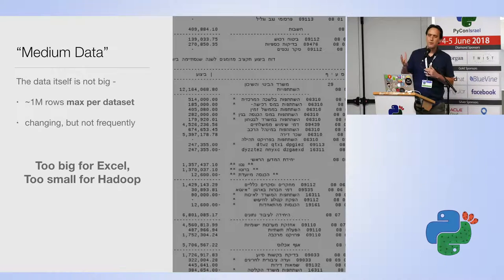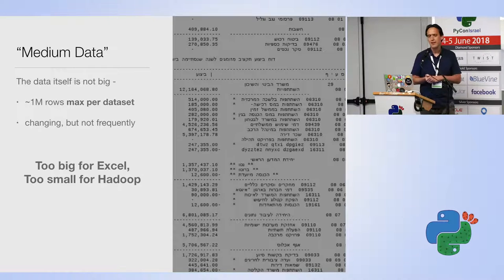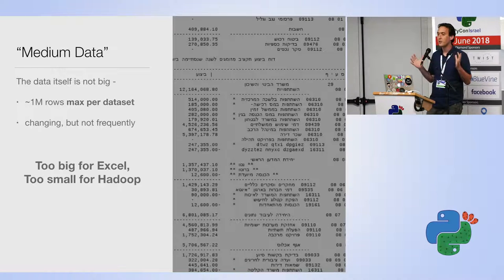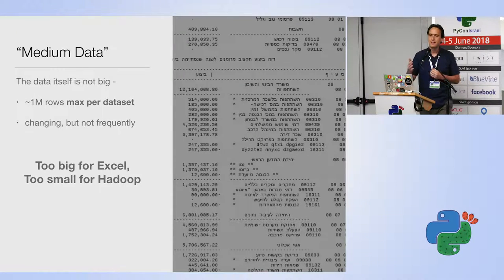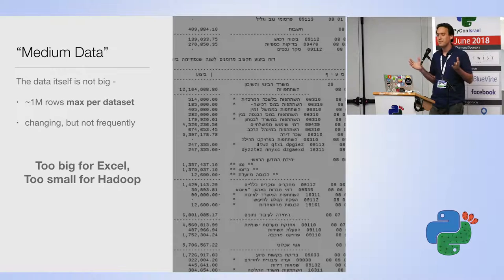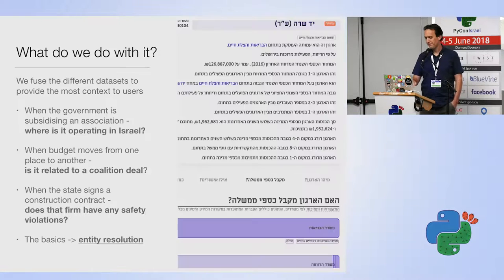These datasets are what we call 'medium data' — not big data. The largest dataset has a million rows; it fits on your laptop, but Excel wouldn't necessarily open it. It's somewhere between Excel and Hadoop — sort of uncharted ground. For example, the government spending data is spread across 400 different Excel files, totalling about a million rows — very hard to work with for normal people.